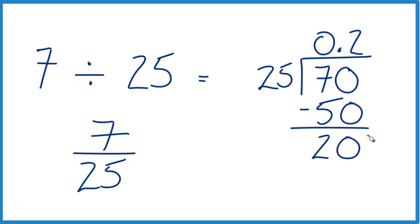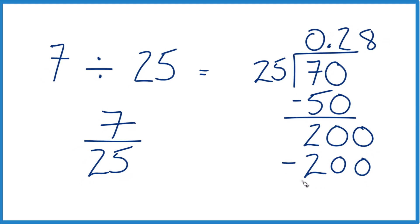It doesn't go into 20, but we could call it 200 if we moved over 1. So I know that 4 times 25 is 100, so 8 times 25, that would be 200. That works out nice. Subtract,